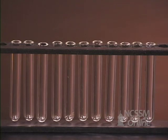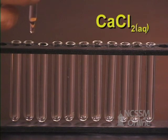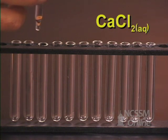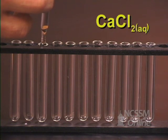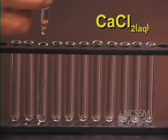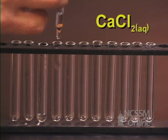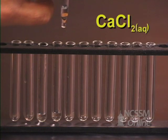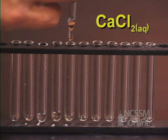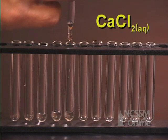We have a series of test tubes. In test tube one, we are going to put zero drops of calcium chloride. In test tube two, we are going to place one drop of calcium chloride. In test tube three, we will place two drops. In test tube four, we will place three drops. In test tube five, four drops, and so on.